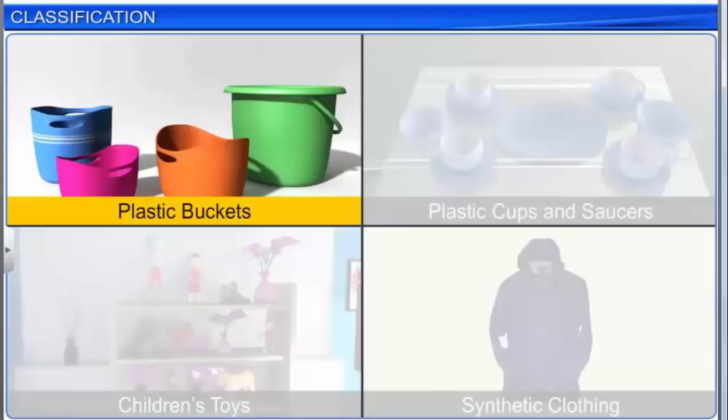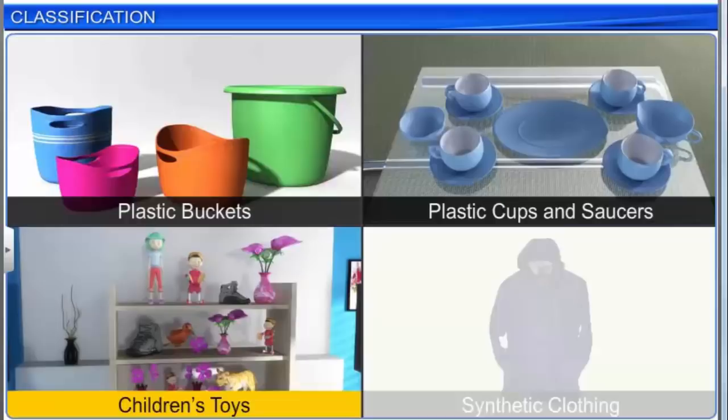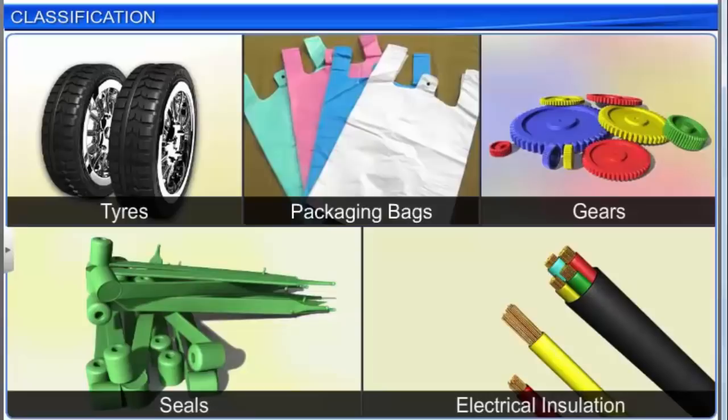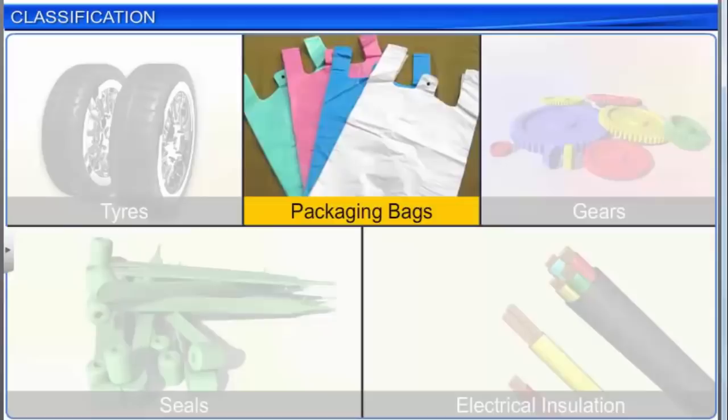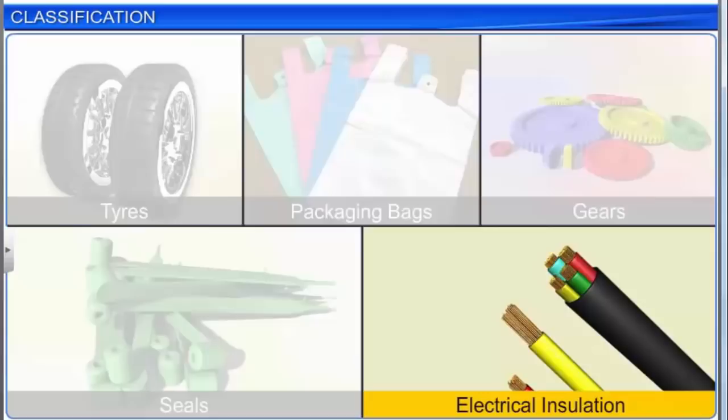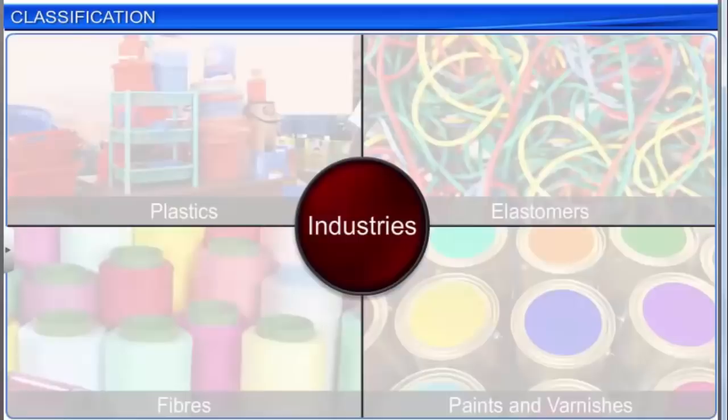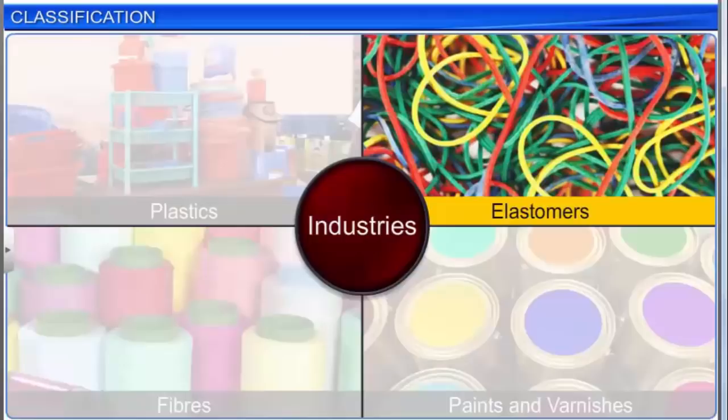Polymers are used in the manufacture of plastic buckets, plastic cups and saucers, children's toys, and synthetic clothing material. Plastics brought about remarkable changes in society and made life easier and more comfortable. Other materials made from polymers include automobile tires, packaging bags, gears, seals, and electrical insulation. Polymers are the basis for four major industries: plastics, elastomers, fibers, and paints and varnishes.